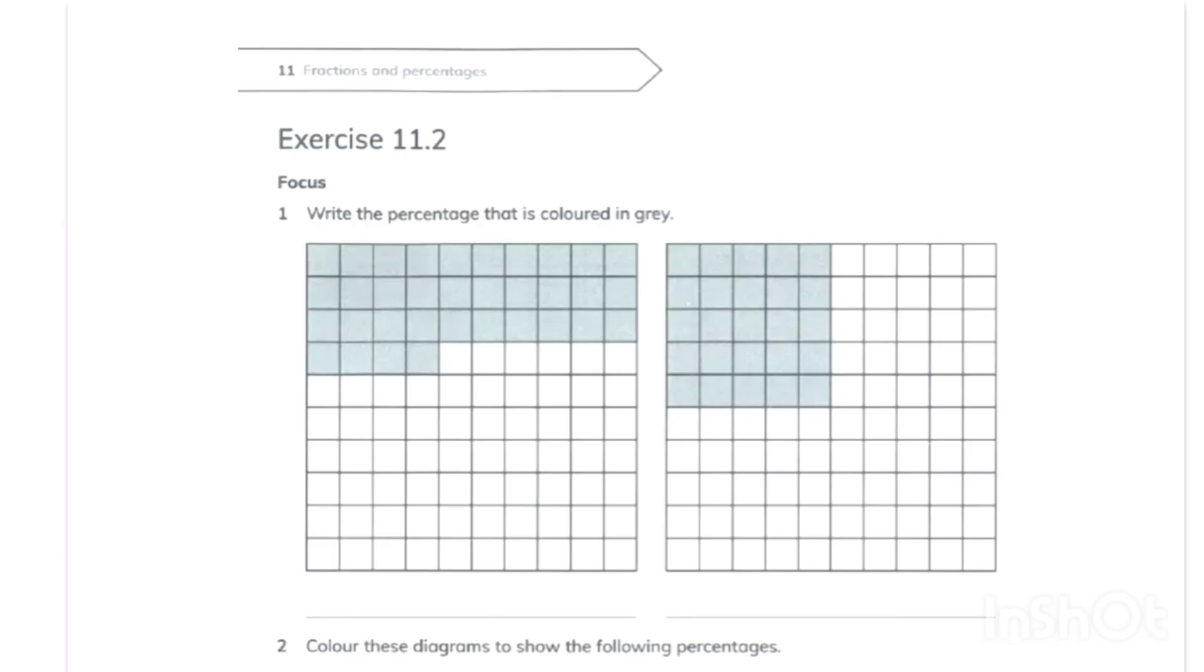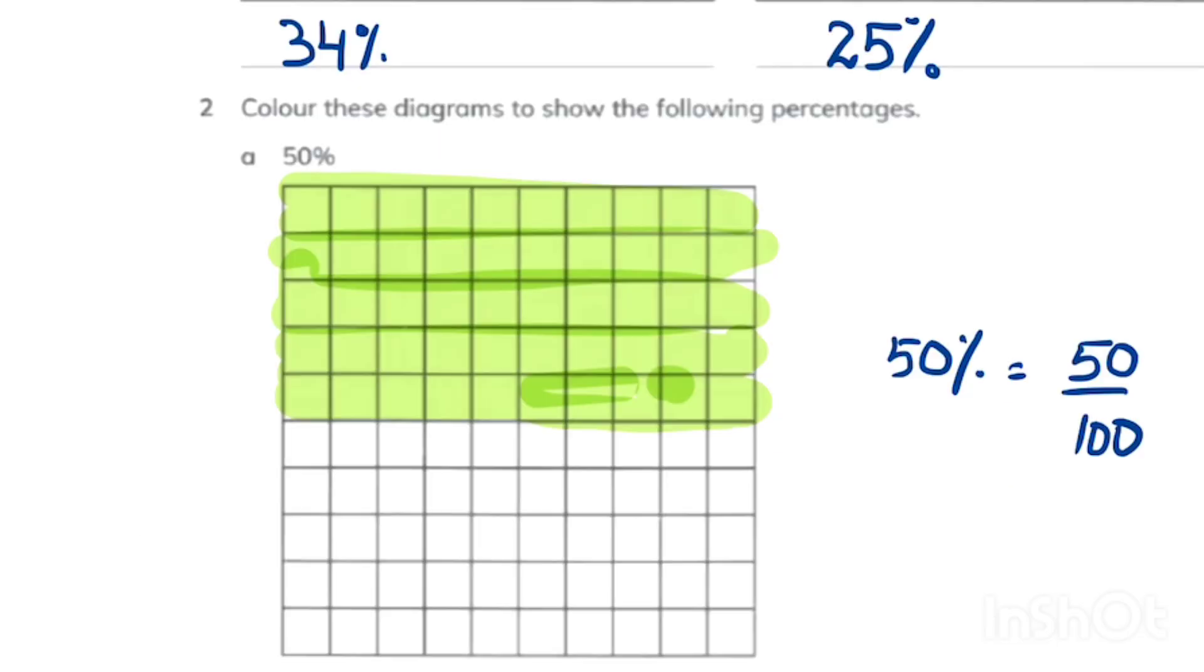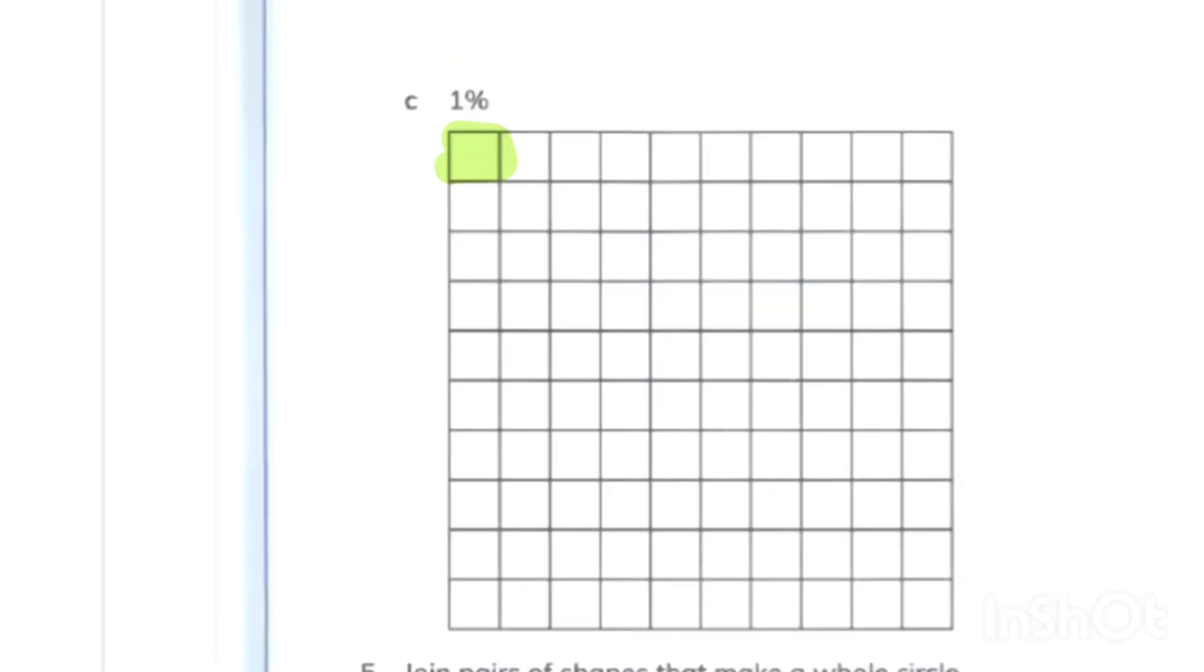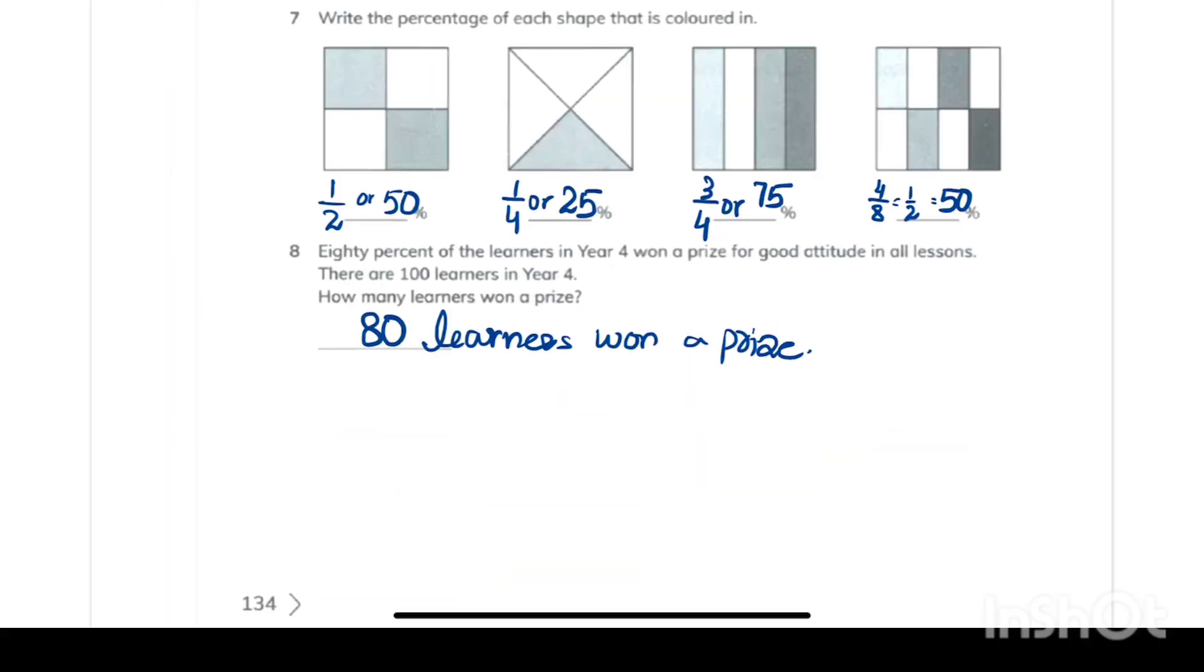Moving on to 11.2. So if you have a 100 grid box you just need to count the numbers to write the percentage. And here is the solution of our circles. These few are simple questions so I am just writing their answers.